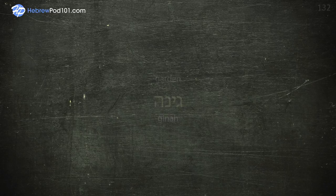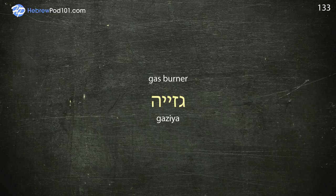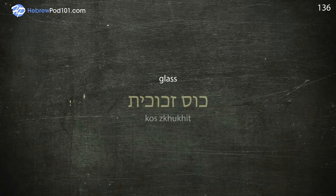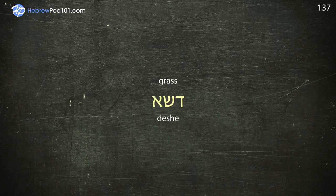Gas burner — Gazia. Gate — Shul. Glass — Sui. Grass — Deshe. Grill.